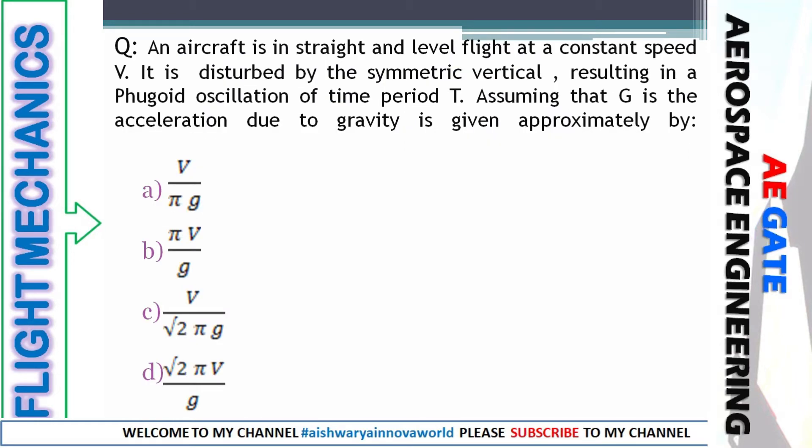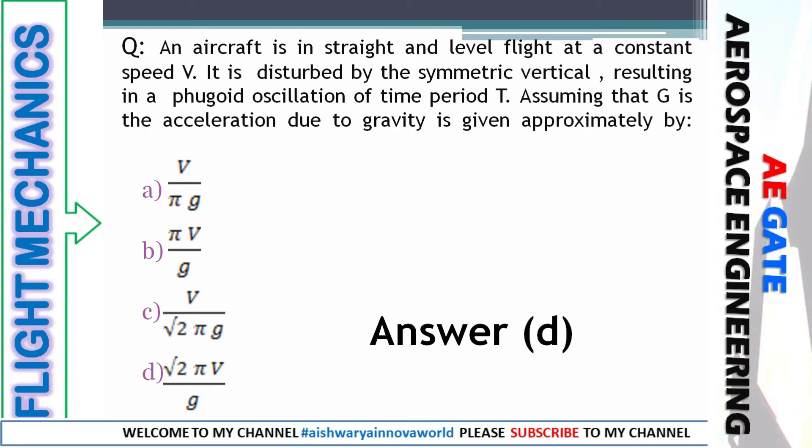Next question: an aircraft is in steady level flight at a constant speed V. It is disturbed by an asymmetric vertical gust, resulting in a phugoid oscillation of time period T. Assuming G is the acceleration due to gravity, the period is given approximately by the formula: T equals 2π times V divided by G, i.e., root(2) × V/G. The answer is option D.